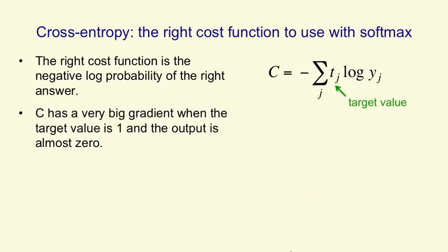It has a nice property that it has a very big gradient when the target value is 1 and the output is almost 0. You can see that by considering a couple of cases. So a value of 1 in a million is much better than a value of 1 in a billion, even though it differs by less than a millionth.